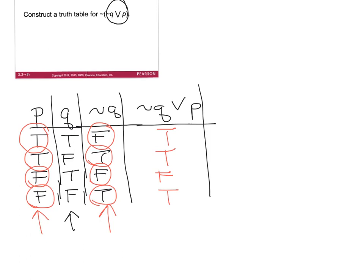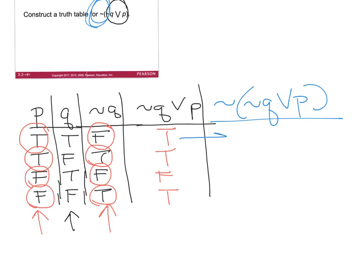Then I need to go one step further and negate what I just found — take the opposite. So the final answers will be false, false, true, false. And you've just created a truth table.